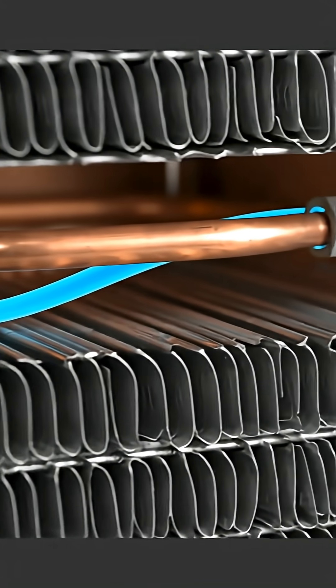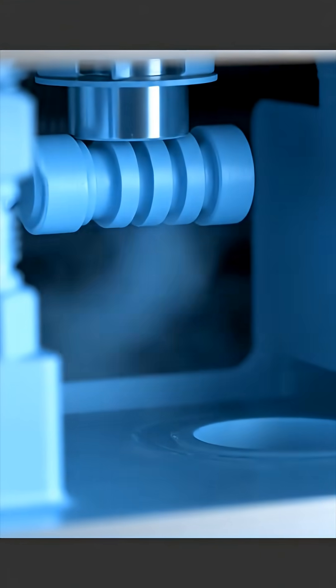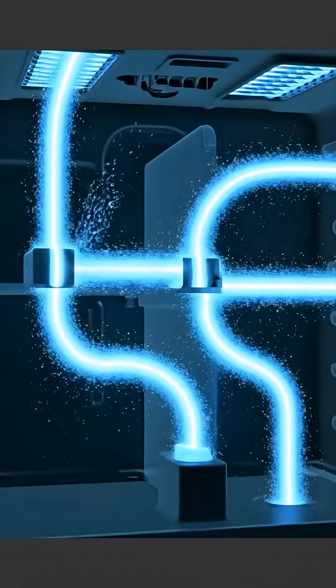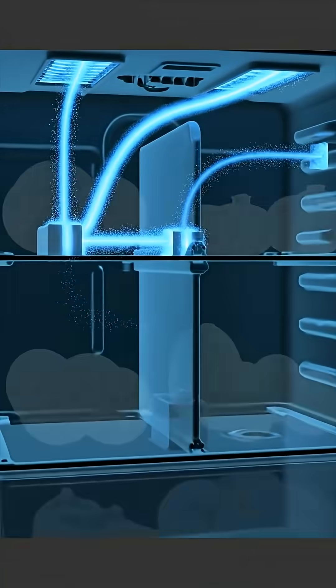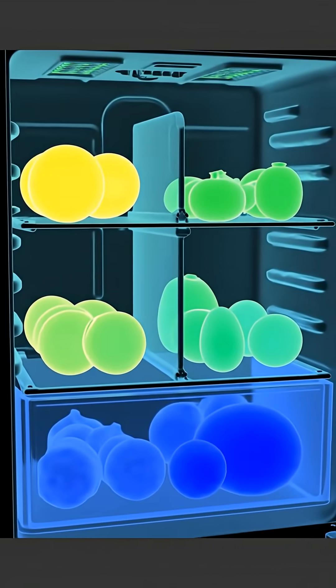Low-pressure refrigerant vapor exits the evaporator and travels back to the compressor to restart the cooling cycle. The evaporator fan distributes cold air through internal ducts, circulating chilled air across all compartments.